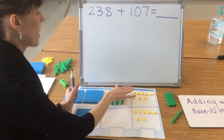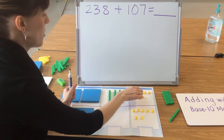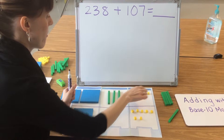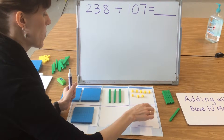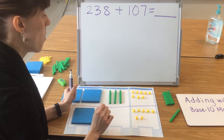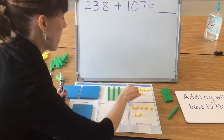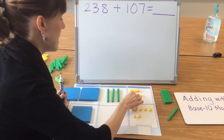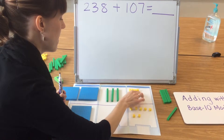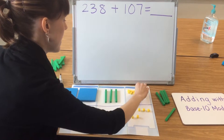Once again, I always start by counting my ones first: 1, 2, 3, 4, 5, 6, 7, 8, 9, 10, 11, 12, 13, 14, 15 ones. So I need to compose a 10. I need to group 10 ones together: 1, 2, 3, 4, 5, 6, 7, 8, 9, 10.